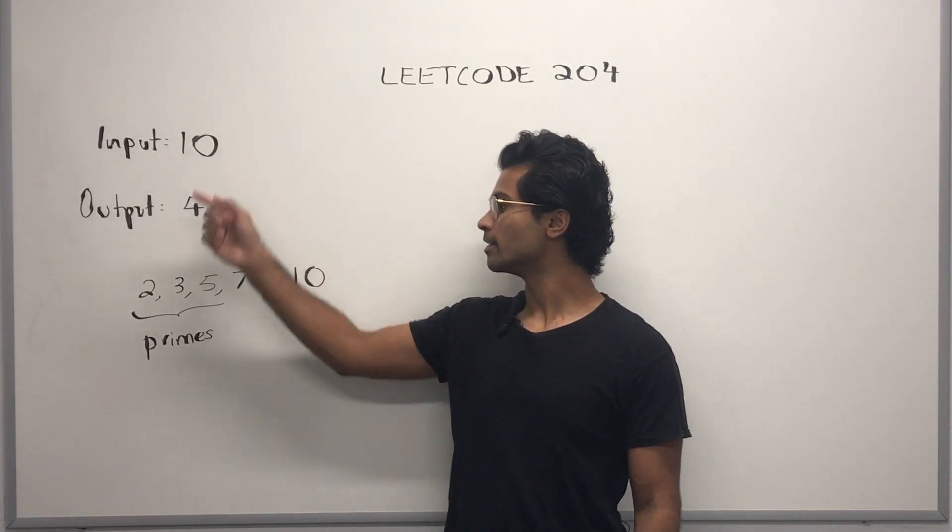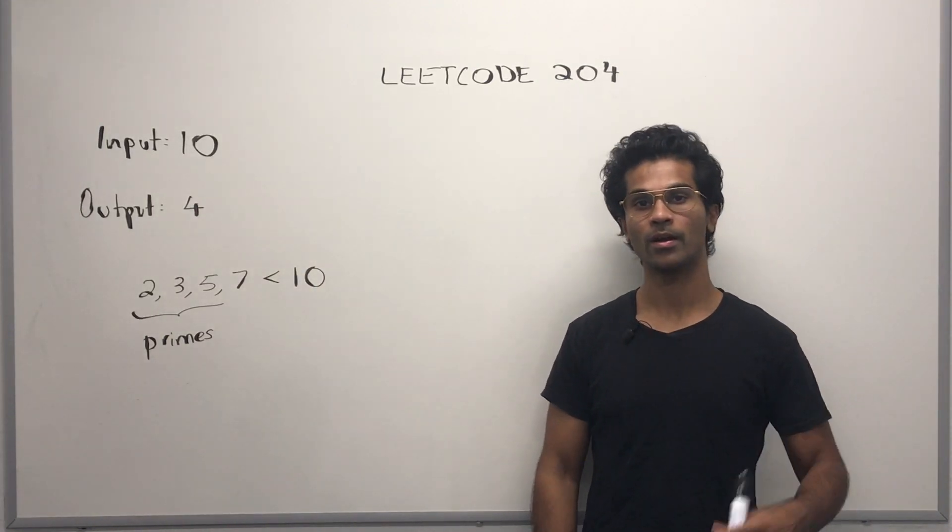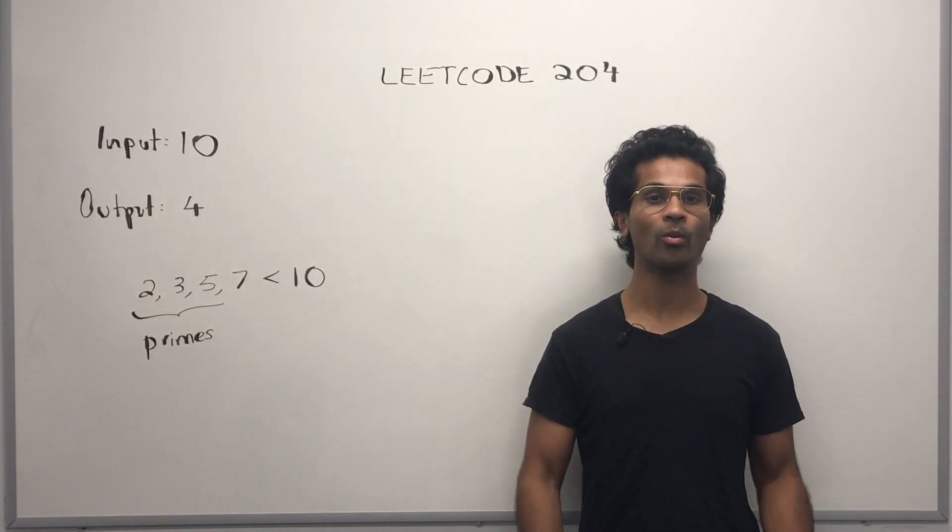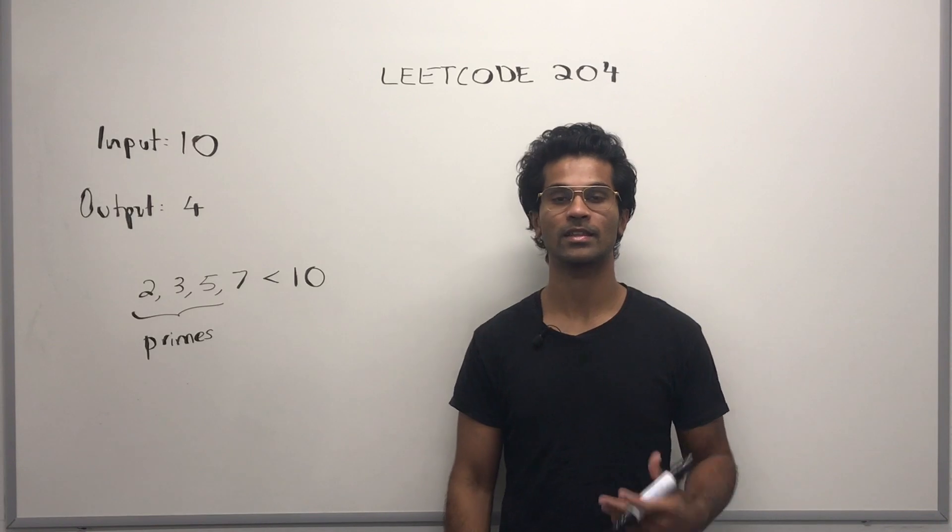For example, if we have 10, then the output is going to be 4 because 2, 3, 5, and 7 are all primes which are less than 10.